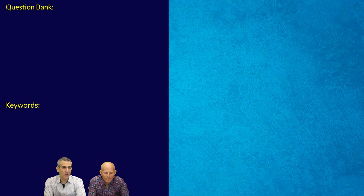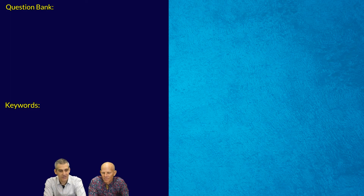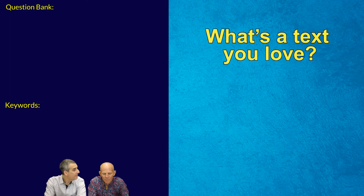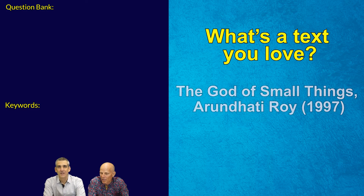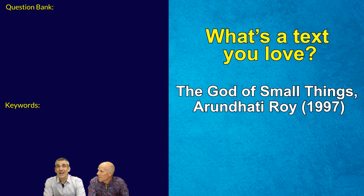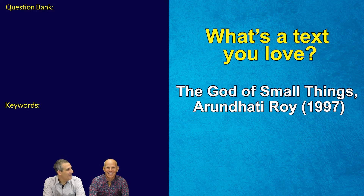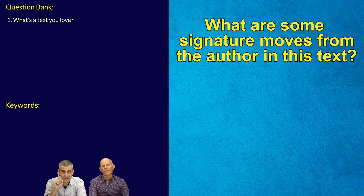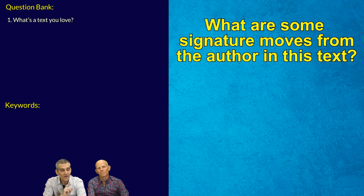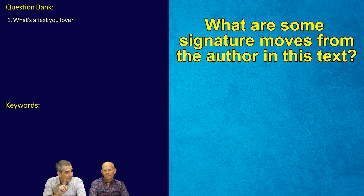What is the text in our two-year program that we have studied together as a class with our teacher that you love? I love The God of Small Things by Arundhati Roy — one of my favorite novels to teach and to read. So what are some signature moves that Arundhati Roy makes as an author in this text?